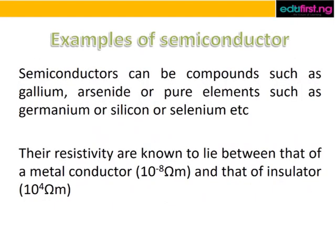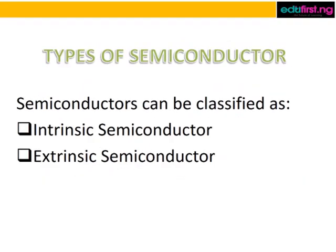Examples of semiconductors: semiconductors can be compounds such as gallium arsenide, or pure elements such as germanium, silicon, or selenium. The resistivity of semiconductors is known to lie between that of a metal conductor, which is 10 raised to power minus 8 ohm-meter, and that of an insulator, which is 10 raised to power 4 ohm-meter.